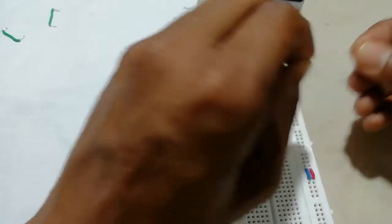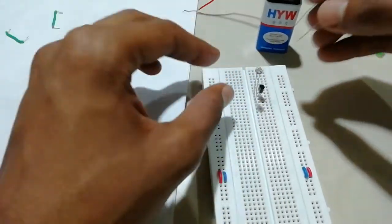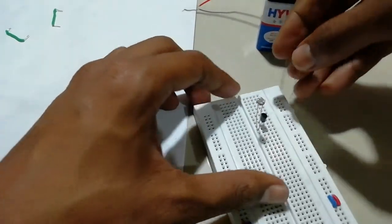Now connect our 220 kilo ohms resistor from base to... We will be connecting base to our LED. Since our LED is absent, we will just connect to base.